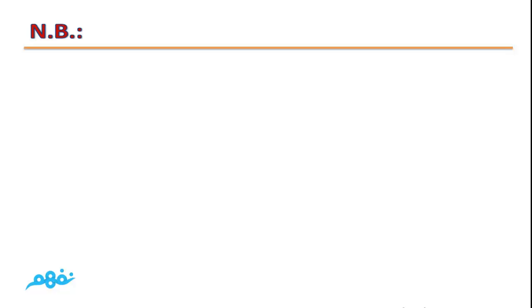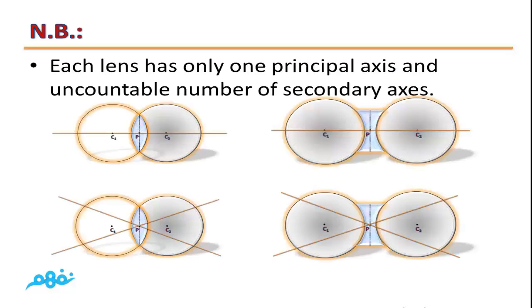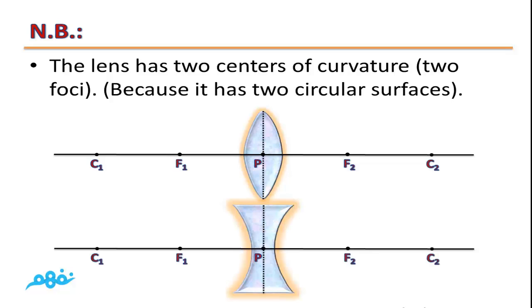Note the following: each lens has only one principal axis and an uncountable number of secondary axes. The lens has two centers of curvature and two foci, because it has two circular surfaces.